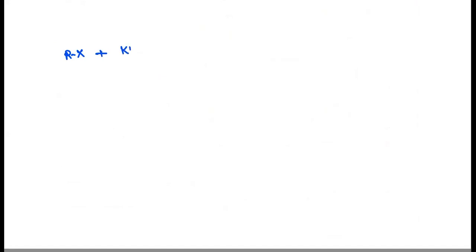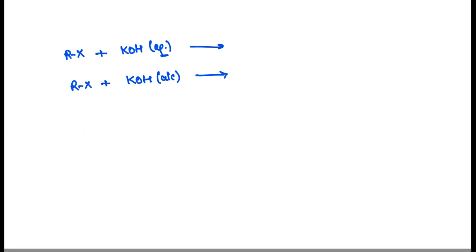So this is an alkyl chloride. If I take a strong base which is in aqueous medium and treat it, then there is a different product. And if we have ROX with a base in alcoholic medium, then there is a different product. In aqueous medium, there is a nucleophilic substitution reaction, in which the X group leaves and you get alcohol — the substitution of X minus.